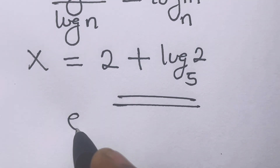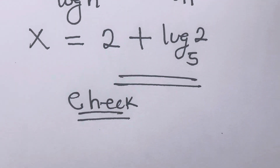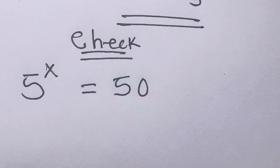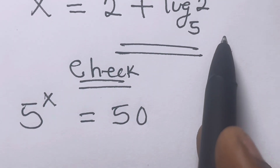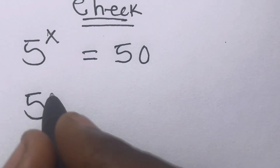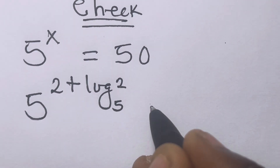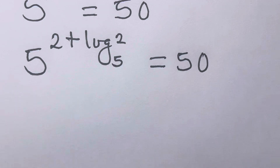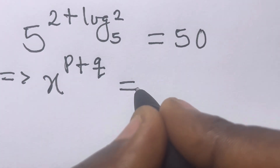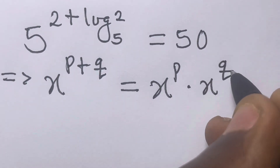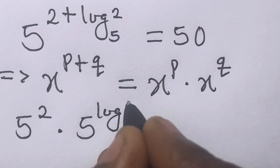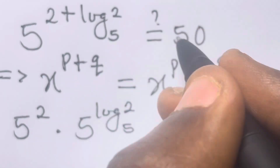So we can actually check this to verify. We have 5 raised to the power x equals 50. Our x equals 2 plus log 2 in base 5. Substituting, we have 5 raised to the power of (2 plus log 2 in base 5) equals 50. From the law of indices, x raised to the power p plus q equals x^p times x^q, so this gives us 5 raised to the power 2, times 5 raised to the power log 2 in base 5, equals 50.